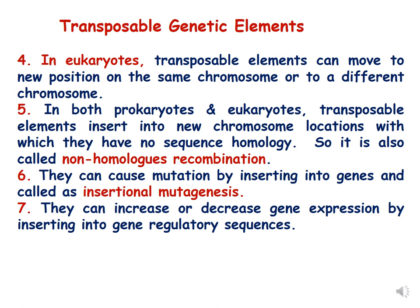In both prokaryotes and eukaryotes, transposable elements insert into new chromosome locations with which they have no sequence homology — this is called non-homologous recombination. Transposons can cause mutation by inserting into genes, called insertional mutagenesis. They can also increase or decrease gene expression by inserting into gene regulatory sequences.